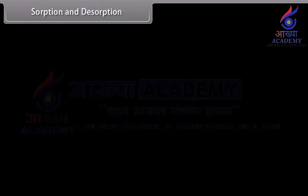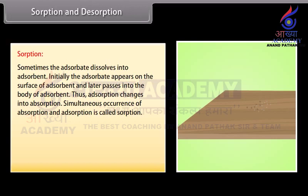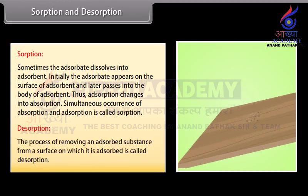Sorption and desorption. Sometimes the adsorbate dissolves into the adsorbent. Initially the adsorbate appears on the surface of the adsorbent and later passes into the body of the adsorbent, so adsorption changes into absorption. Simultaneous occurrence of absorption and adsorption is called sorption. Desorption is the process of removing an adsorbed substance from a surface on which it is adsorbed.